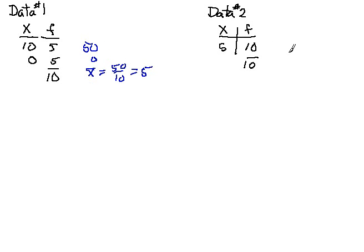And what about this data set? Well, this has 10 values, each of which are 5. And there's 10 points. And so again, the mean of this is just going to be 50 over 10, or 5.